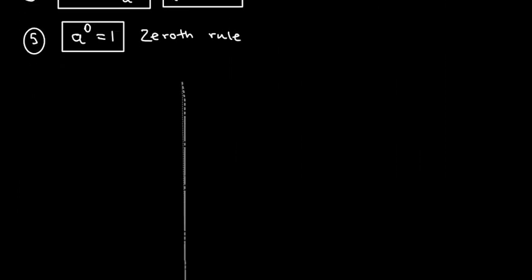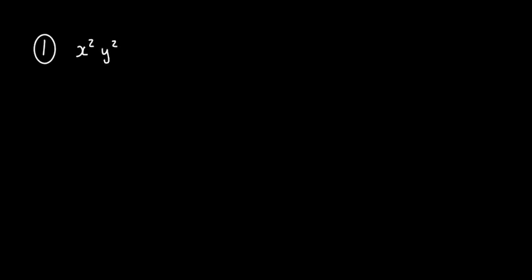Now let's start with simplifying. We're going to look at some complex questions for grade 8. Example one: you've got x squared times y to the 3, times x to the 4 times y to the 3. So these two expressions are multiplying each other.